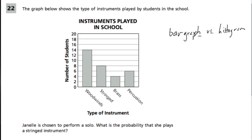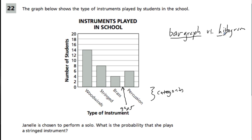We can tell this is a bar graph and not a histogram because on the bottom we have categories, and also because there are gaps between each category. In a histogram, what you would see aren't so much categories as ranges of numbers. That's a big difference between bar graphs and histograms.